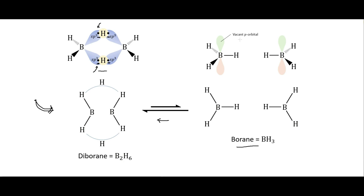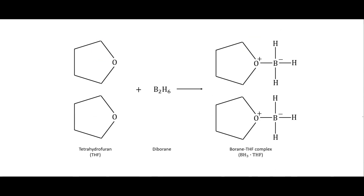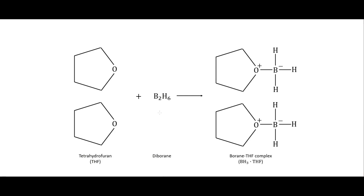Diborane and boron in general are quite unstable because there is no full octet on the boron — it has a vacant p orbital and wants to react with things strongly. Diborane is actually quite unstable and even explosive in the real world. So quite often it is bound to tetrahydrofuran (THF): two THF molecules plus one diborane give two borane-THF complexes, written as BH3·THF. This is the usual form used because the boron now has a full octet.